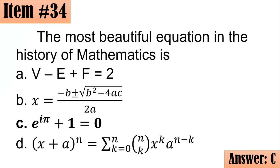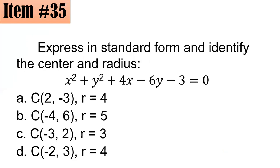Number 35. Express in standard form and identify the center and the radius of x² + y² + 4x - 6y - 3 = 0. Did you go for A, B, C, or D?